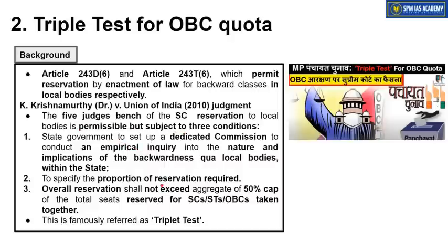The second condition is to specify the proportion of reservation required — the commission must propose how much reservation can be provided. The third condition is that no matter what, SC, ST, and OBC reservations combined in local bodies should not exceed 50% total. These three conditions laid down in the K. Krishna Murthy versus Union of India judgment are collectively known as the Triple Test for OBC quota in local bodies.